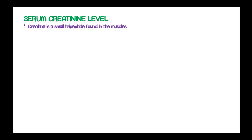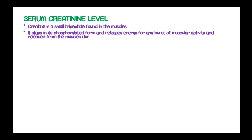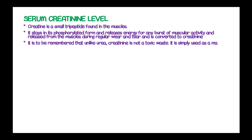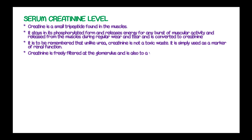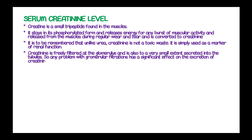Creatinine is a small tripeptide found in the muscles. It stays in its phosphorylated form, releases energy in bursts of muscle activity, and is released from muscles during wear and tear, then converted to creatinine. Unlike urea, creatinine is not a toxic waste but is simply used as a marker of renal function. Creatinine is freely filtered by the glomerulus and to some extent secreted into the tubules, so any problem with glomerular filtration has a significant effect on creatinine excretion, resulting in a substantial rise in serum creatinine levels.